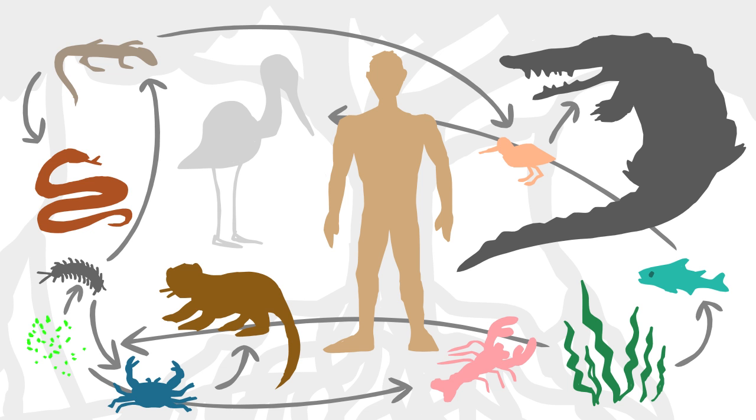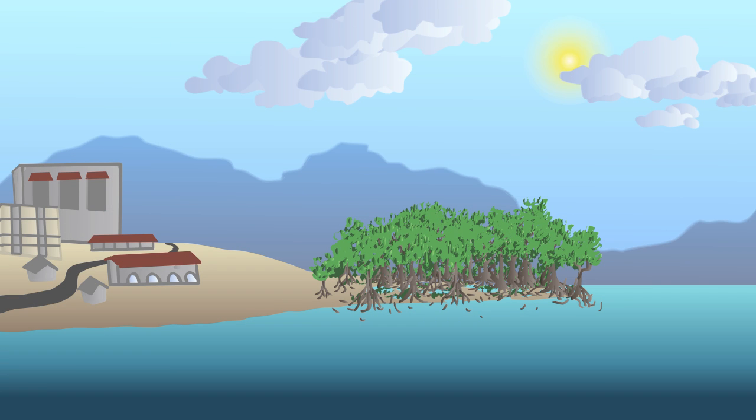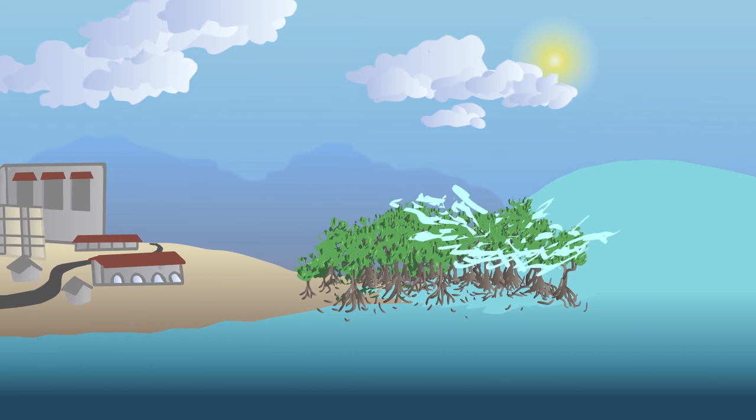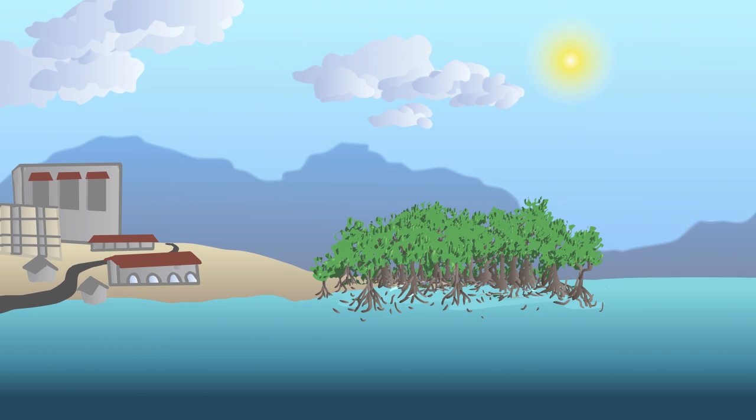They support a huge diversity of species, including our own. These forests benefit local communities in many ways. Mangroves prevent coastal erosion and they are a natural buffer zone that absorbs the damage from tsunamis and storm surges.